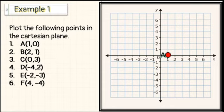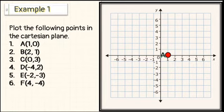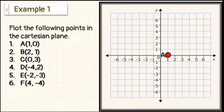For number 2: B (2, 1). Since the coordinates are both positive, the location of point B is in quadrant 1. So, from the origin, count 2 units to the right and then 1 unit up. The location of point B is here.